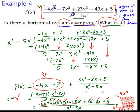We'll see you next time when we talk about graphing rational functions in general — using these vertical and horizontal asymptotes together to quickly make graphs of these kinds of functions. See you at Educator.com later. Bye.